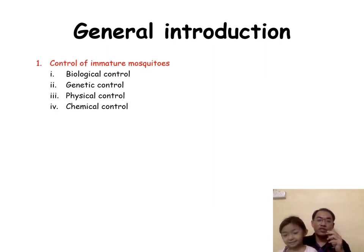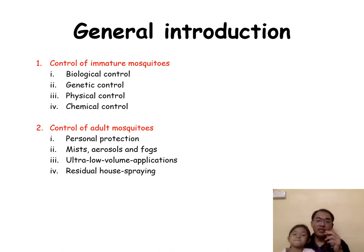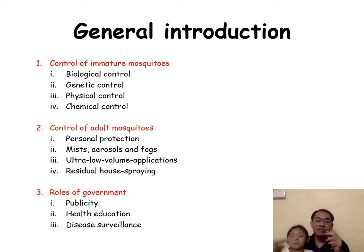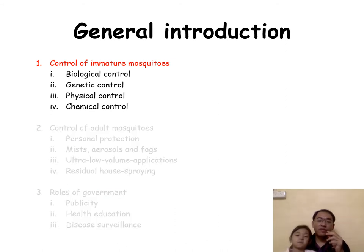The general control of mosquitoes can be grouped into: the control of immature mosquitoes that inhabit aquatic habitats, the control of adult mosquitoes that mostly inhabit land areas, and the role of government in reinforcing public awareness, policy making, and disease surveillance. The control of immature mosquitoes involves biological control, genetic control, physical control, and chemical control.